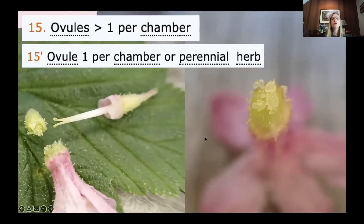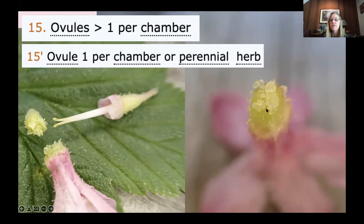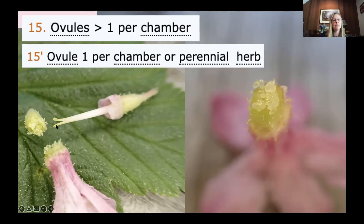Next: ovules more than one per chamber, or ovule one per chamber or perennial herb. In this case we don't know exactly how many ovules there are, but we can see there are lots of them. It's a little tricky to see how many chambers there are in this really immature ovary. When it's a fully developed fruit that's an easier guess, but in the meantime you can look at the number of style branches — that's often a good indication of how many chambers or carpels you may have in the ovary.